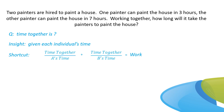We have two painters, so we make two fractions, add them together, and set it equal to the amount of work — in this case, one house. The time together is unknown, so x goes in the numerator. The denominator of the first fraction is A's time alone: three hours. The denominator of the second fraction is B's time alone: seven hours.